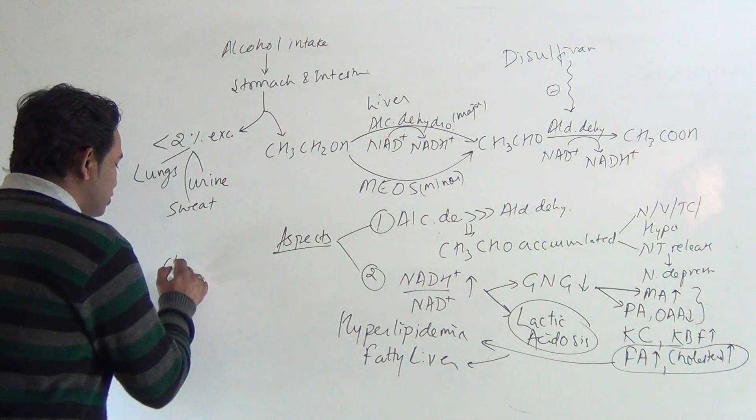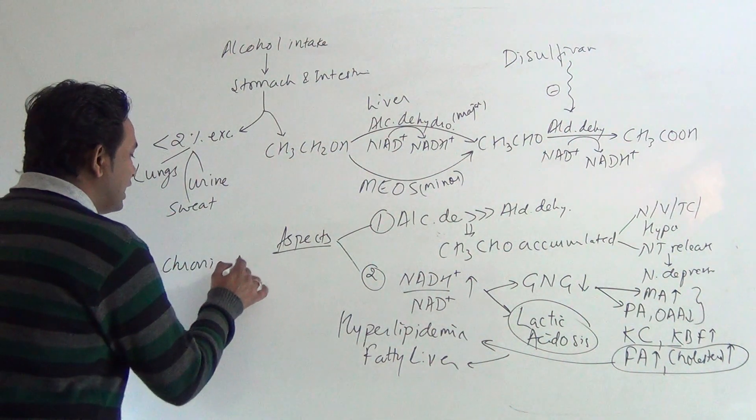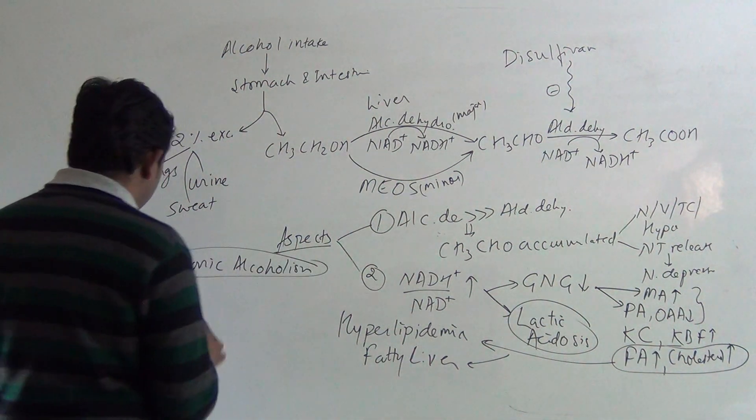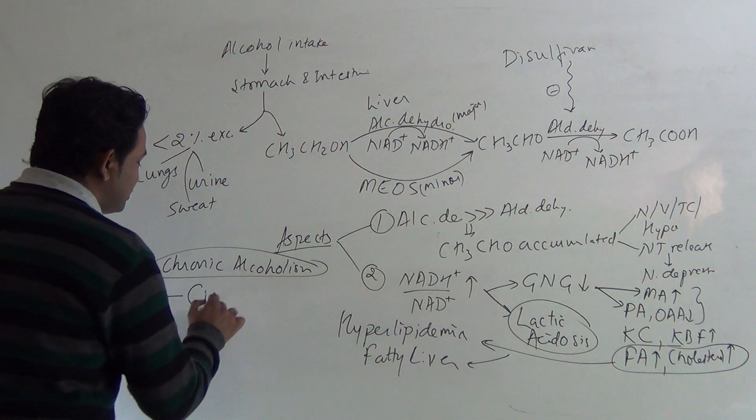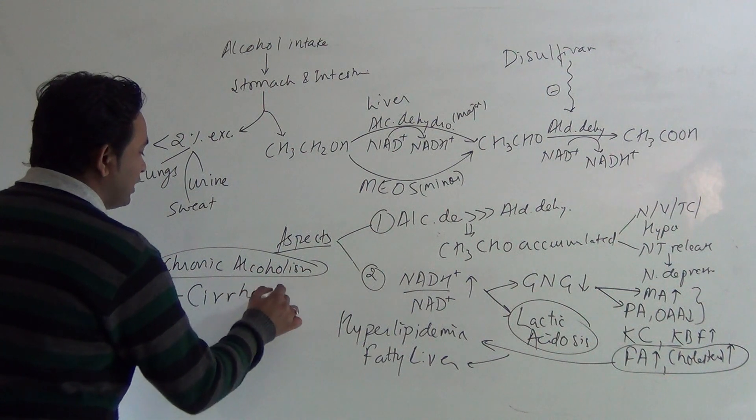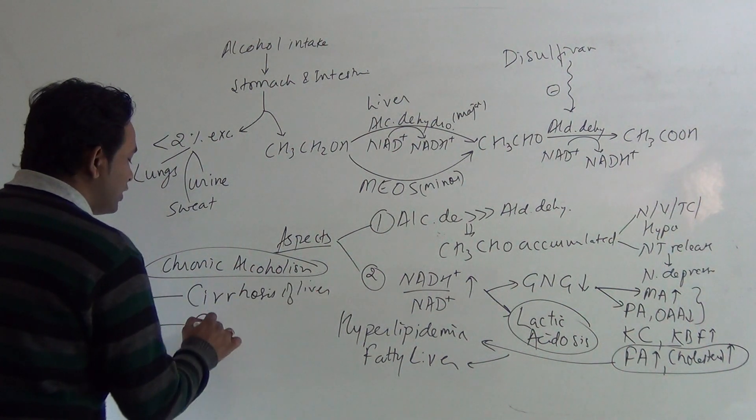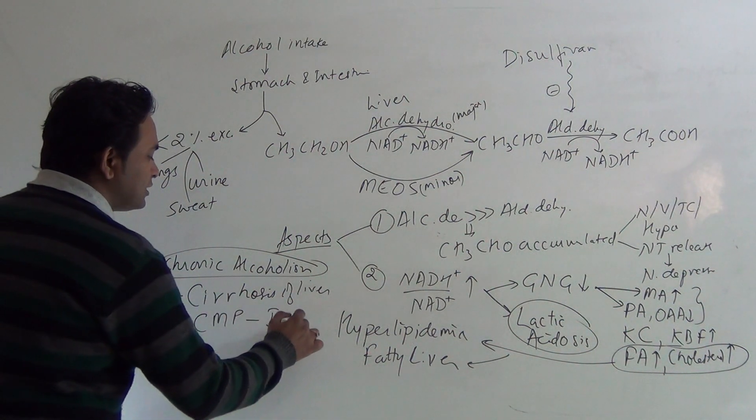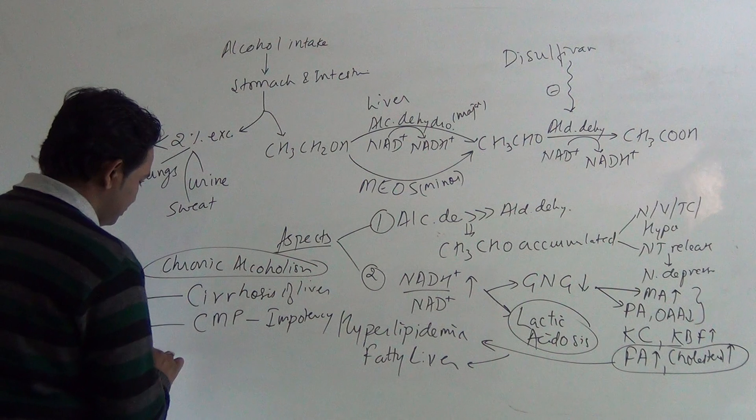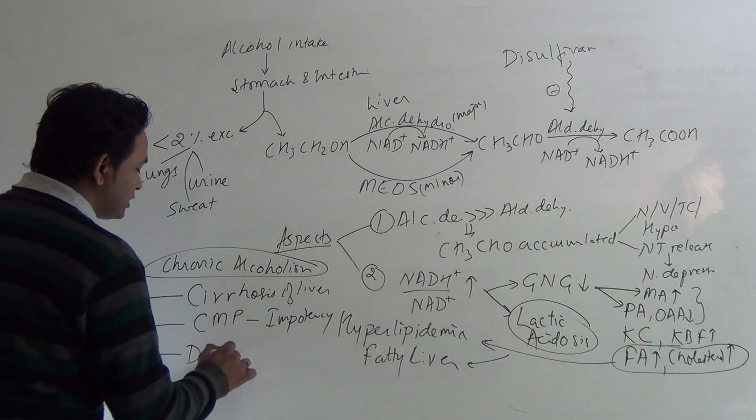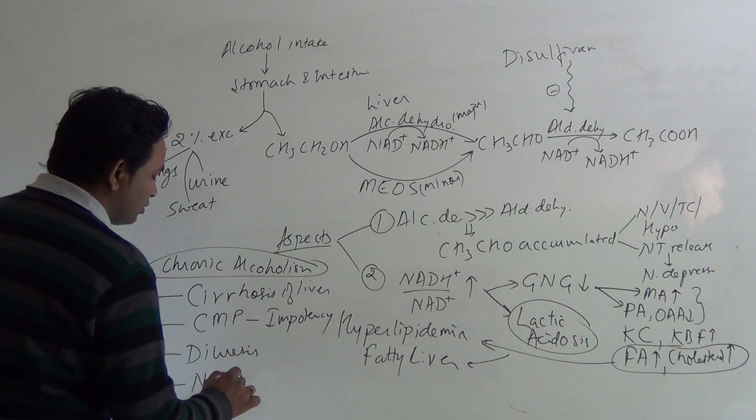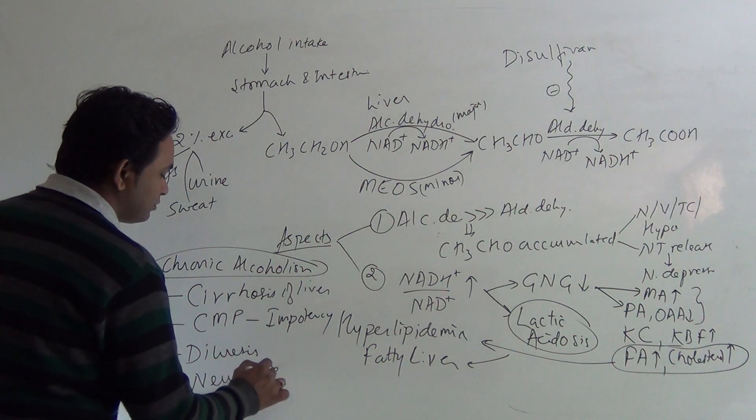We can also observe the effects of chronic alcoholism: cirrhosis of liver, cardiomyopathy, impotency, diuresis, and neurodegenerative changes.